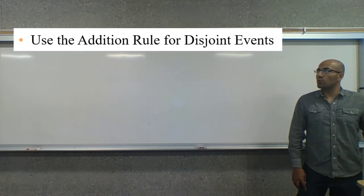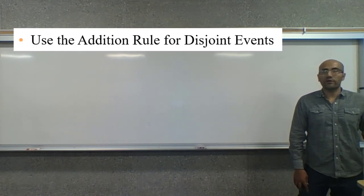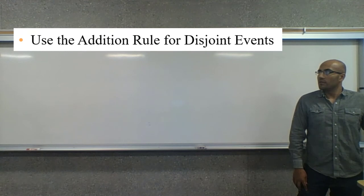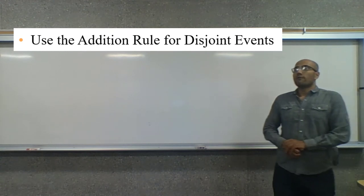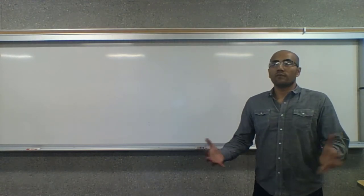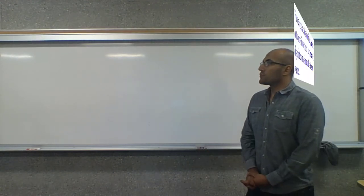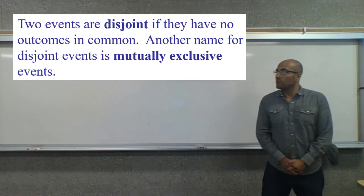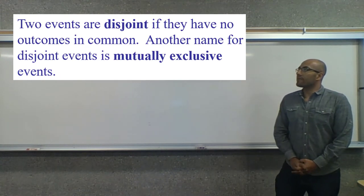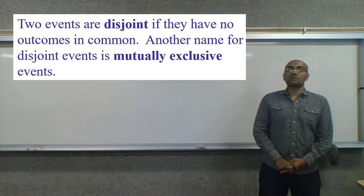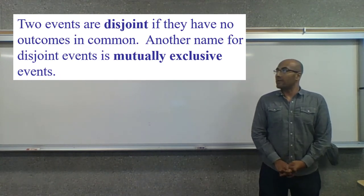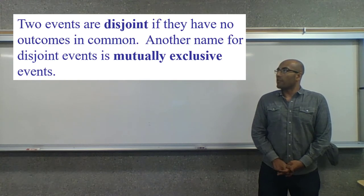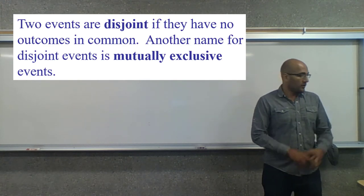Using the addition rule for disjoint events — first of all, what is a disjoint event? Two events are disjoint if they have no outcomes in common. Another name for disjoint events is mutually exclusive events.